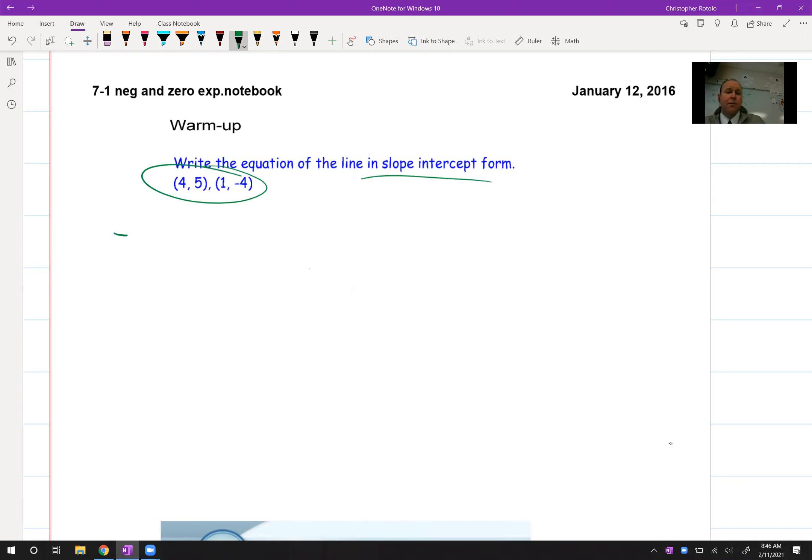So I might start with negative 4 minus 5. If I start with negative 4, I get to start with 1, 1 minus 4. It looks like I get negative 9 over negative 3, which is awesome because that means the slope is plain old 3.